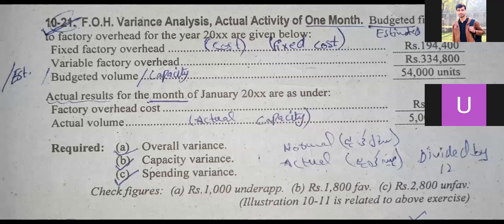Hello students. I hope you will be happy to hear from all of you in this lecture. In this lecture, we will deal with chapter number 10, question number 21, which is relevant to your actual activity of one month. We have continued the topic of FOH variances, which are relevant to your actual activity of one month. So, let's see.